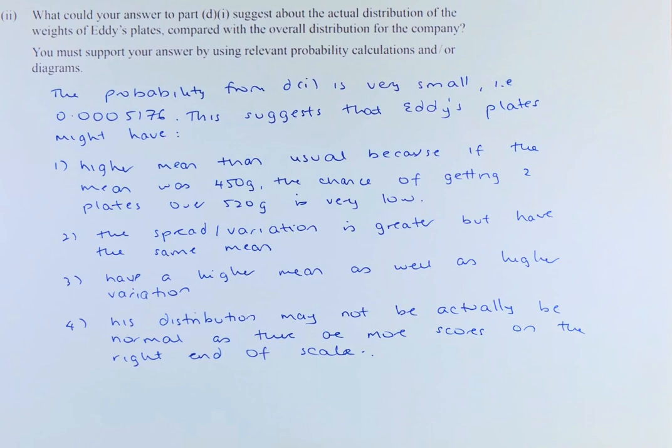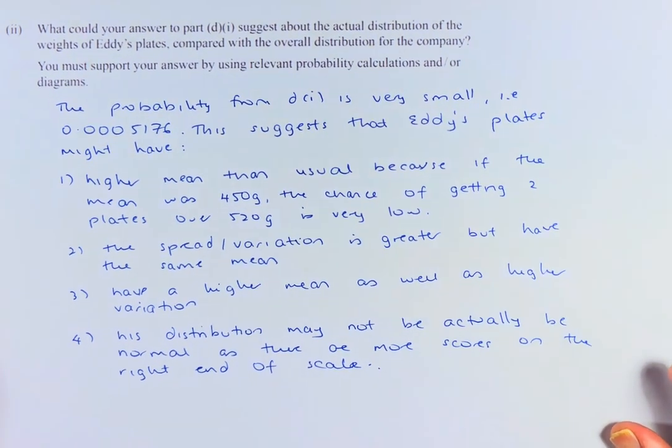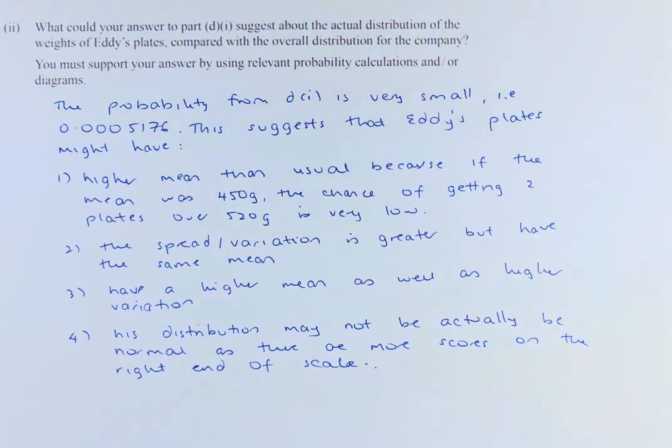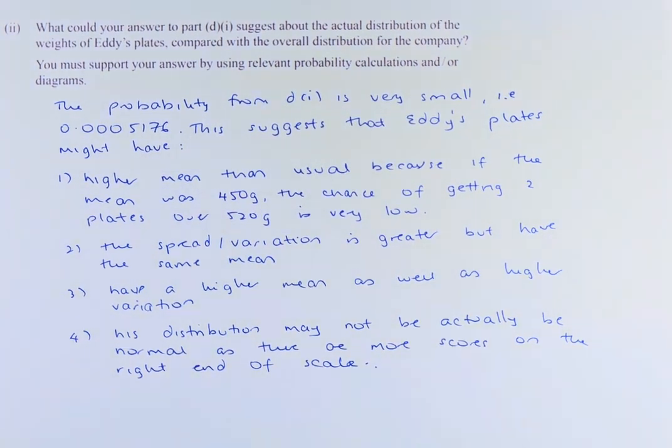I'm going to adjust the question. So we're going to read the question. How could your answers in part D1 suggest that the actual distribution of the weight of Eddie's plates compared with the overall distribution of the company? So what we're going to do now is answer this question. The probability from part D1 is very, very small, 0.005, which is small. This suggests that Eddie's plates might have the following.